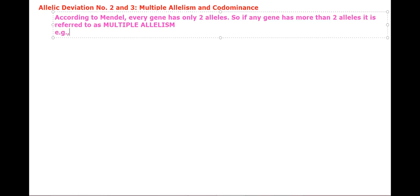Examples of multiple allelism include the ABO blood group system and skin color in rabbits. We will discuss these examples. So ABO blood group system and skin color in rabbits are the examples we are taking.